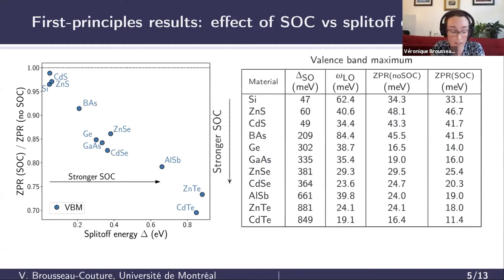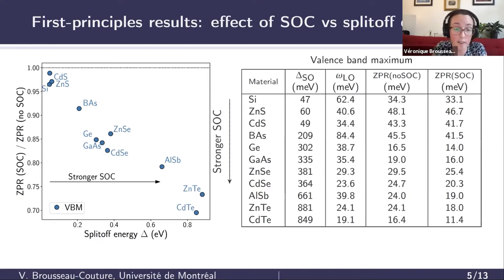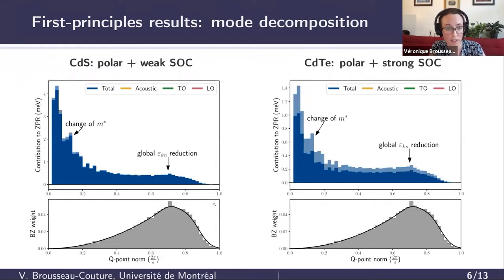Let's now take a look at the different first-principles results in more detail. For the remaining of this talk I will only address the valence band renormalization. What I'm showing here is the ratio of the ZPR with to without spin-orbit coupling—the ZPR reduction ratio—with respect to the split-off energy, which is a direct indicator of the spin-orbit coupling strength. For all materials shown, the valence band extrema is made from p-states. Just as we could have expected, the stronger the spin-orbit coupling, the larger the reduction of the ZPR, as we go from sulfides to selenides to tellurides.